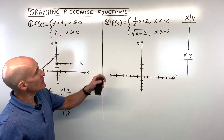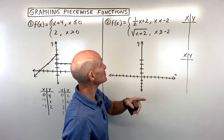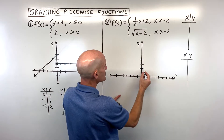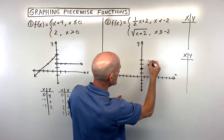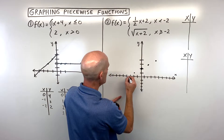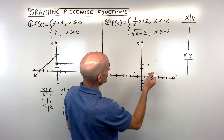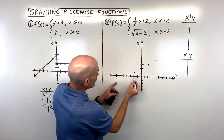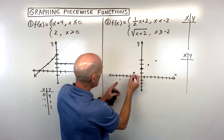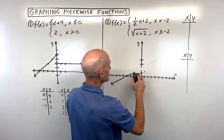For example 2, we have y equals one half x plus 2 when x is less than negative 2. This is a line with a y-intercept of 2 and a slope of one half, so rise 1, run 2. Since we only want the part where x is less than but not equal to negative 2, the endpoint is an open circle and we erase everything to the right of negative 2.